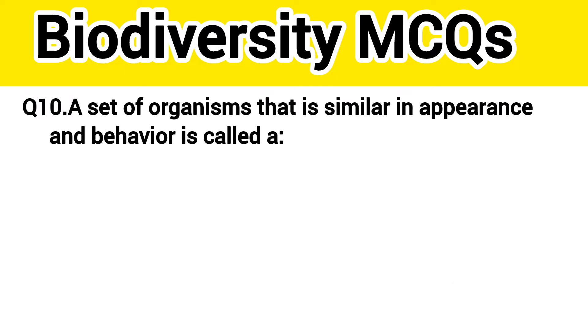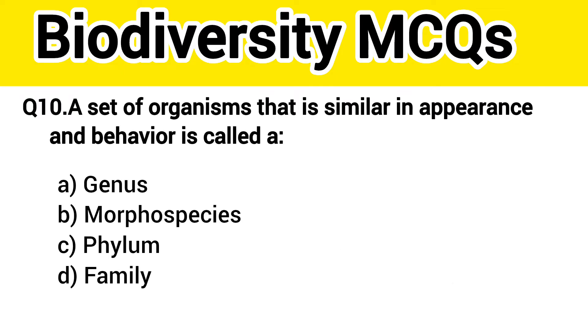Question number 10. A set of organisms that is similar in appearance and behavior is called? The right answer, option B: Morphospecies.